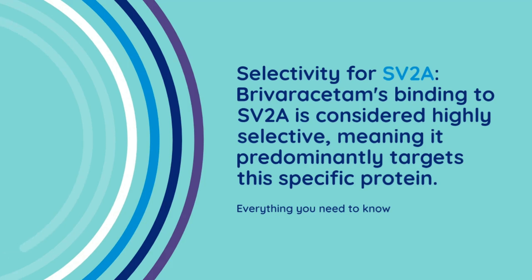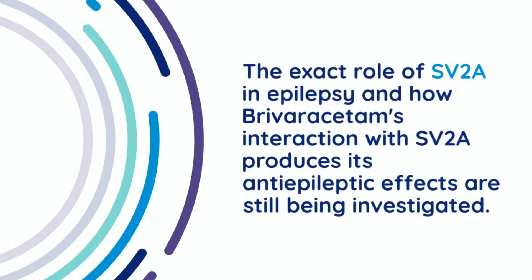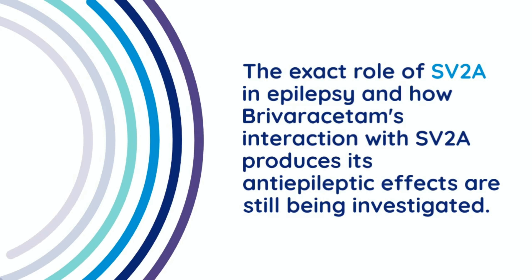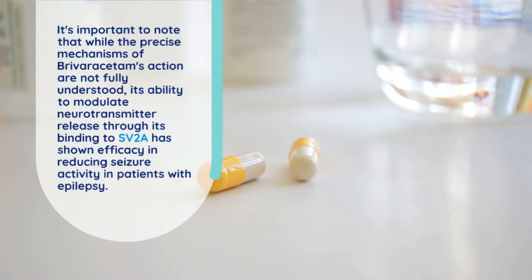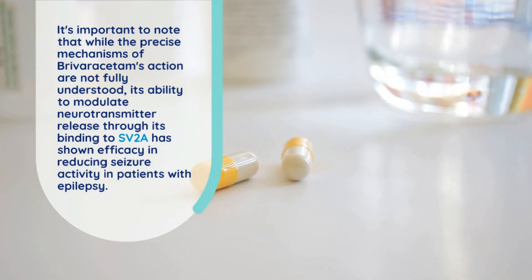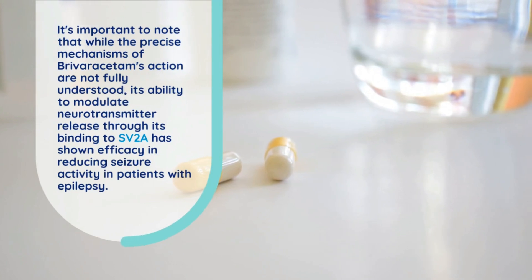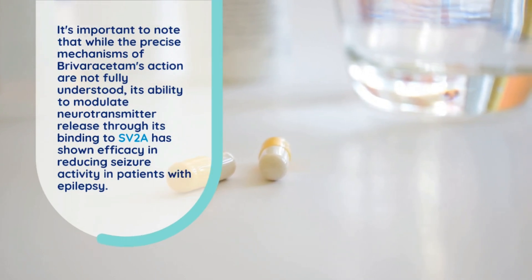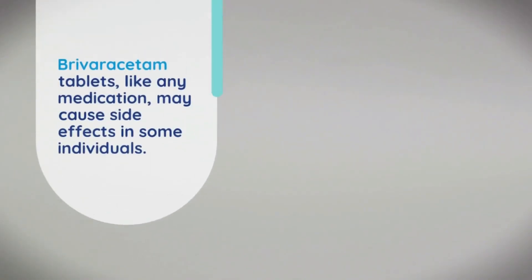Selectivity for SV2A: brivaracetam's binding to SV2A is considered highly selective, meaning it predominantly targets this specific protein. The exact role of SV2A in epilepsy and how brivaracetam's interaction with SV2A produces its anti-epileptic effects are still being investigated. Nevertheless, its ability to modulate neurotransmitter release through SV2A binding has shown efficacy in reducing seizure activity in patients with epilepsy.